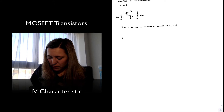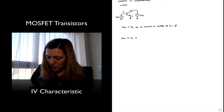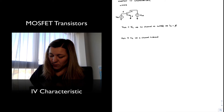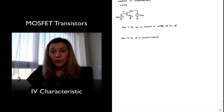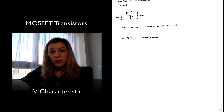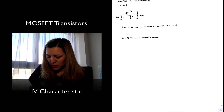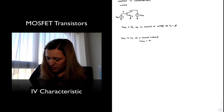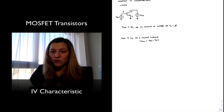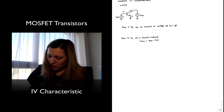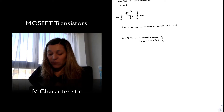As soon as VGS becomes greater than or equal to the threshold voltage, we have a channel induced underneath the gate. Any amount that we bring the gate voltage beyond the threshold voltage is referred to as the overdrive voltage, which is defined as VGS minus VT.